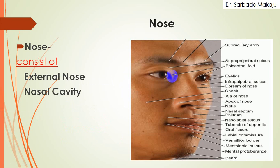Before starting with the nasal cavity directly, first of all I would like to go in detail about the nose. This portion what you have seen in this picture is known as the nose. The nose consists of two parts: this portion is known as the external nose, and this portion is known as the internal nose, which is also known as the nasal cavity.